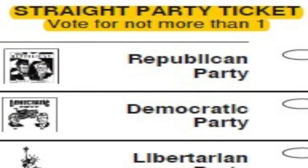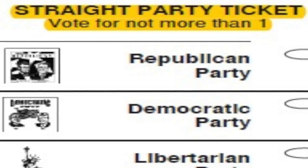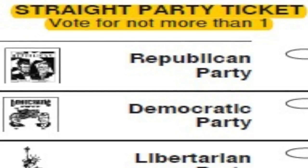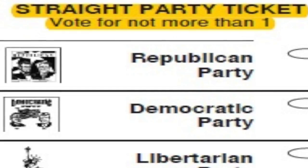Another option you have in November is to cast a straight ticket, a split ticket, or a mixed ticket. A straight ticket is to cast a vote for a political party of your choosing. By doing this, you will automatically be giving a vote to all of the candidates under the partisan section that is represented by the political party that you selected. If you are okay with this, that is all that you have to do for the partisan section.